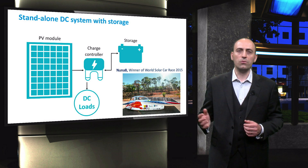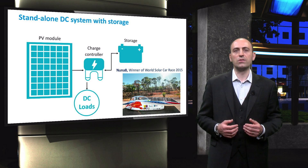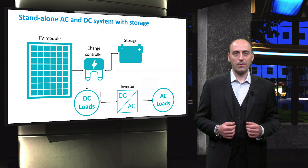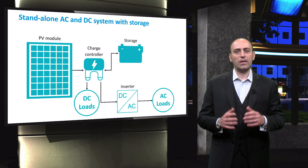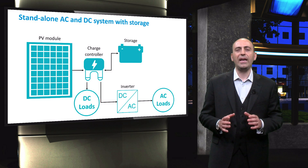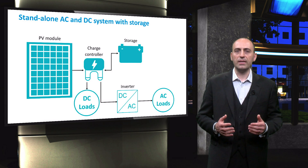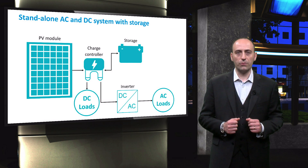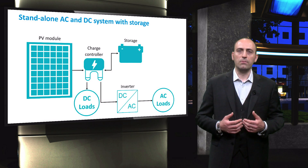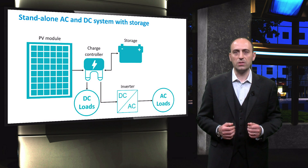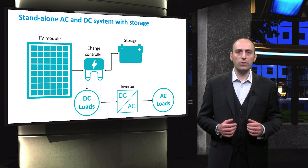It is also used in the Nuna Car Series, the racing car designed by TU Delft and powered only by the Sun, which won the World Solar Car Race in Australia. Then with a slight modification to the system, AC loads can be powered by adding an inverter too. This is the case of buildings that are completely independent from the grid. Note that in most modern houses, DC power is supplied directly to all the DC appliances without passing through any inverter, which would waste a lot of energy in the conversion.